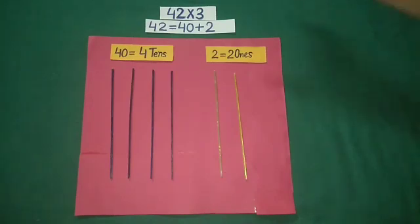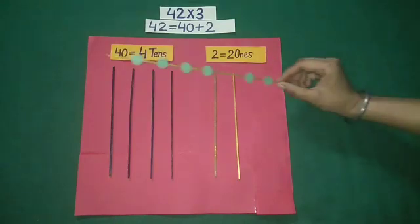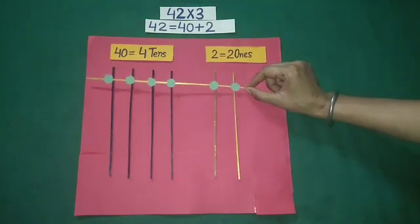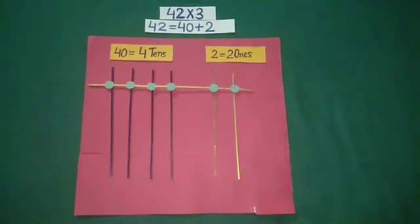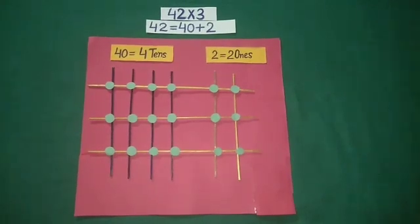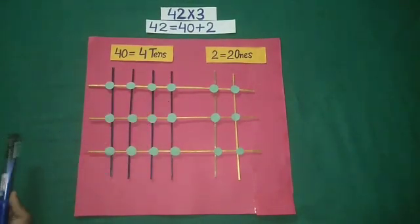Now we have to multiply 42 with 3. To multiply with 3, we keep 3 yellow sticks horizontally on these vertical sticks: 1, 2, 3. By placing these horizontal sticks, we get some intersection points.